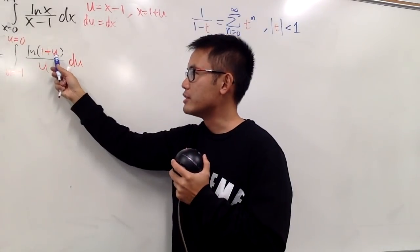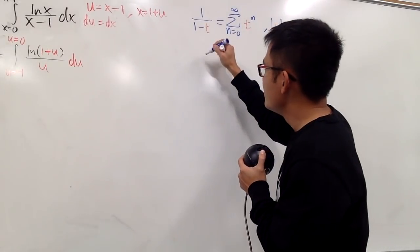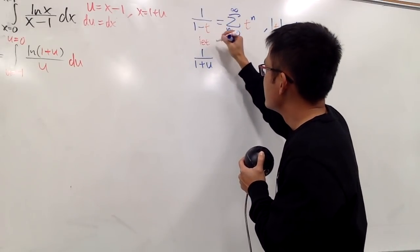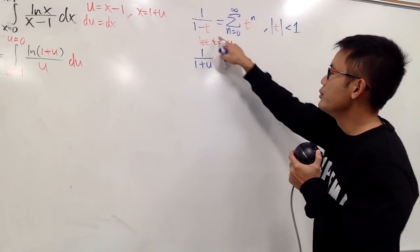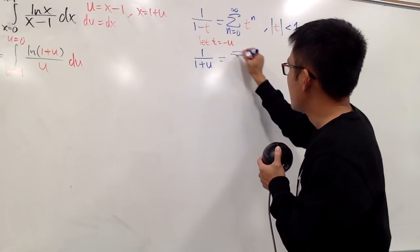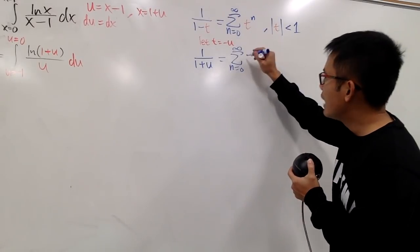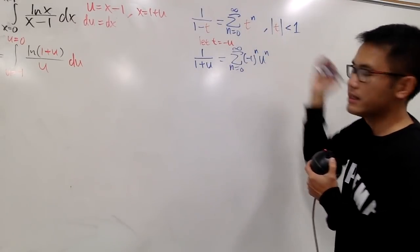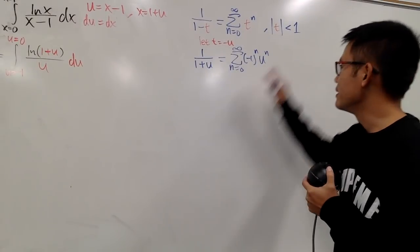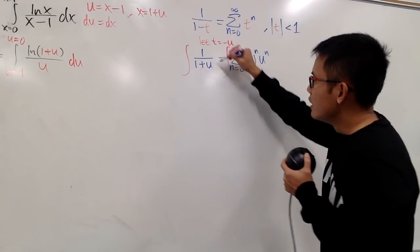We need 1 over (1+u), so let t = -u. Plugging -u into t gives us 1 over (1+u) equals the sum from n=0 to infinity of (-1)^n times u^n. To get ln(1+u), we integrate both sides with respect to u. On the left, the integral gives ln(1+u). On the right, we get c plus the sum from n=0 to infinity of (-1)^n over (n+1) times u^(n+1).